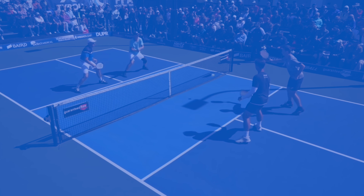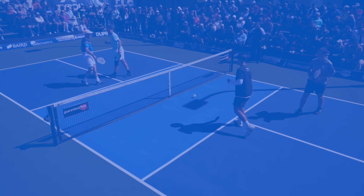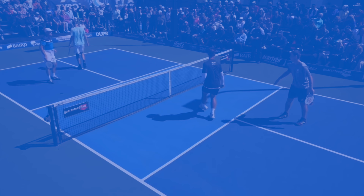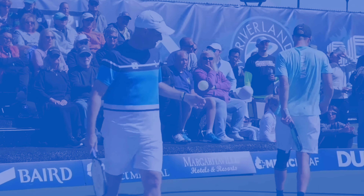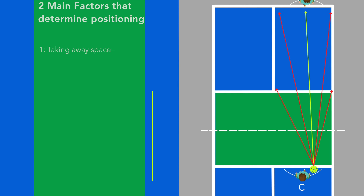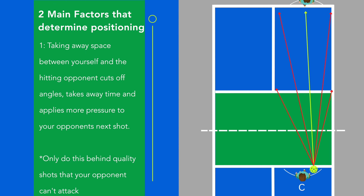There are two main factors at the top of the pyramid that basically drive almost all of our decision-making on where we should be on the court. The first one is understanding that the closer you are to the person who's hitting the ball, the more you cut off potential options for them — you cut off angles in the court, you take away space for them to work with — and ultimately those equal applying more pressure to your opponents.